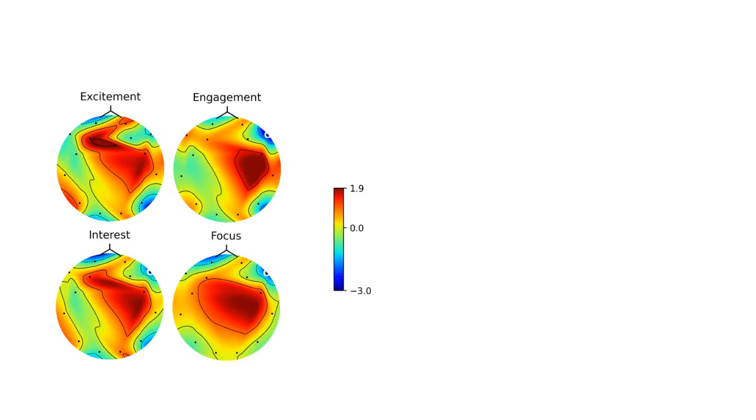Here's how your brain looks when it is in different states: excited, engaged, interested, focused. The red zones are the most active parts of your brain, while the yellow and green are progressively less active, and the blue ones are the least active.